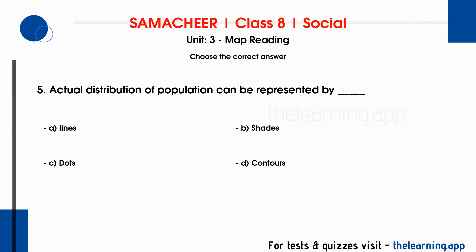Question 5: Actual distribution of population can be represented by dash. Options are a. Lines, b. Shades, c. Dots, d. Contours. Correct answer is c. Dots.